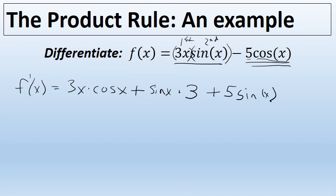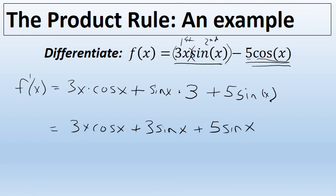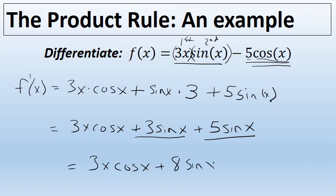Here we have the derivative. I'm going to clean it up a little bit and rewrite it as 3x cosine x plus 3 sine of x plus 5 sine of x. Now the last two terms, 3 sine of x and 5 sine of x, can be combined, and we'll state our final answer for the derivative of f of x as 3x cosine of x plus 8 sine of x.